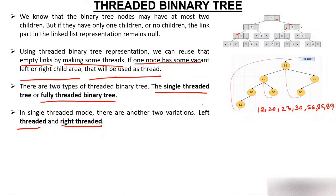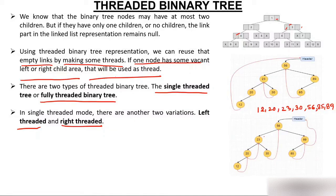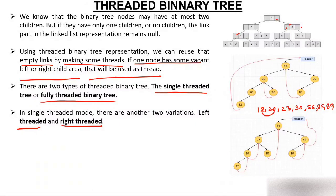Now for right threaded binary tree: those nodes whose right pointers are free will keep the information of their in-order successor. Node 12 has both pointers free. From the in-order traversal, the successor of 12 is 20, so node 12 will keep the information of 20 in its right pointer.